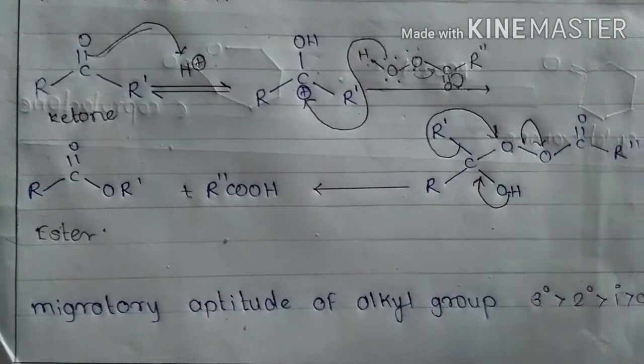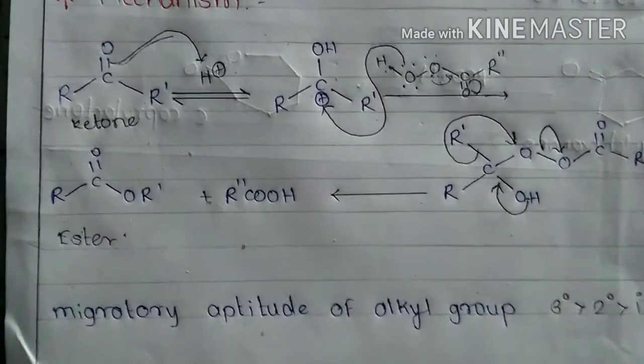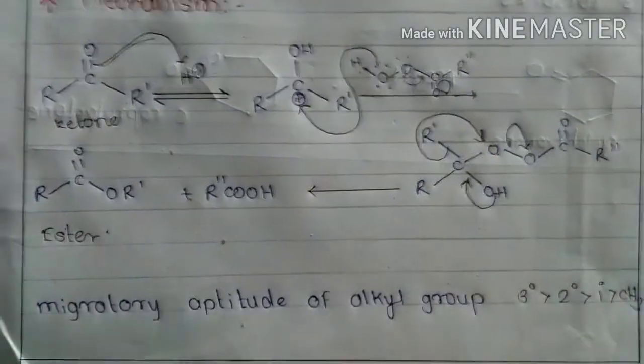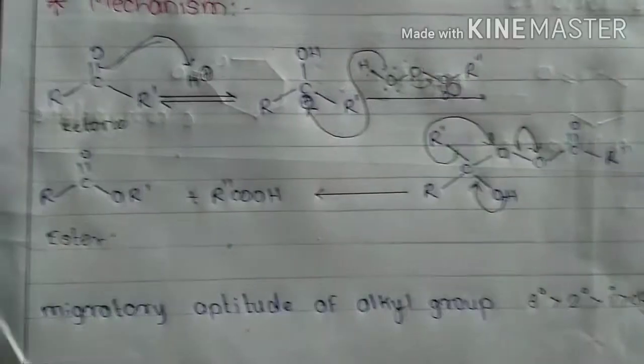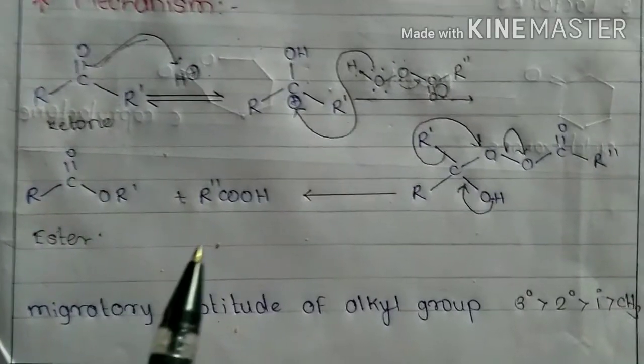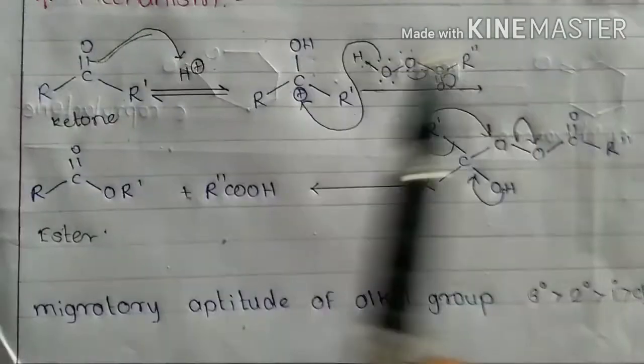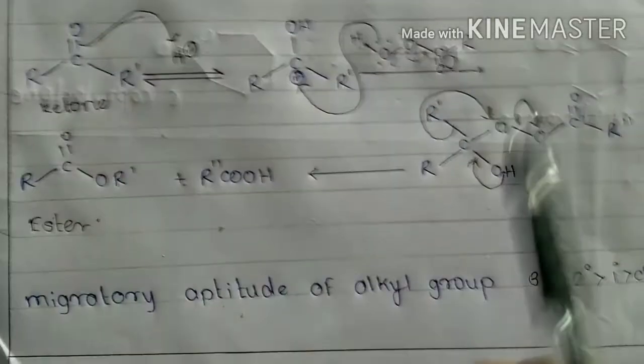Then the migratory aptitude. In the unsymmetrical ketones, that means R and R' is different, that group migrates which is more electron releasing, that means which is more electron donating. Because here oxygen is electropositive in nature.